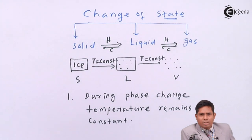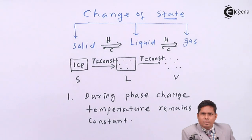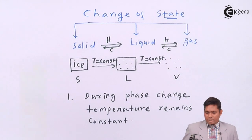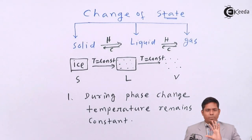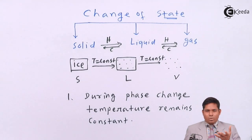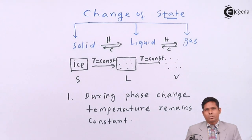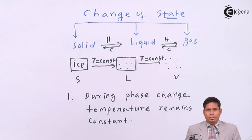In our next video we will discuss the triple point of water. The triple point of water is basically when all three states exist at a particular situation — you will find ice, liquid water, and water vapor all existing together. That point is called the triple point, and it is discussed using a phase diagram.